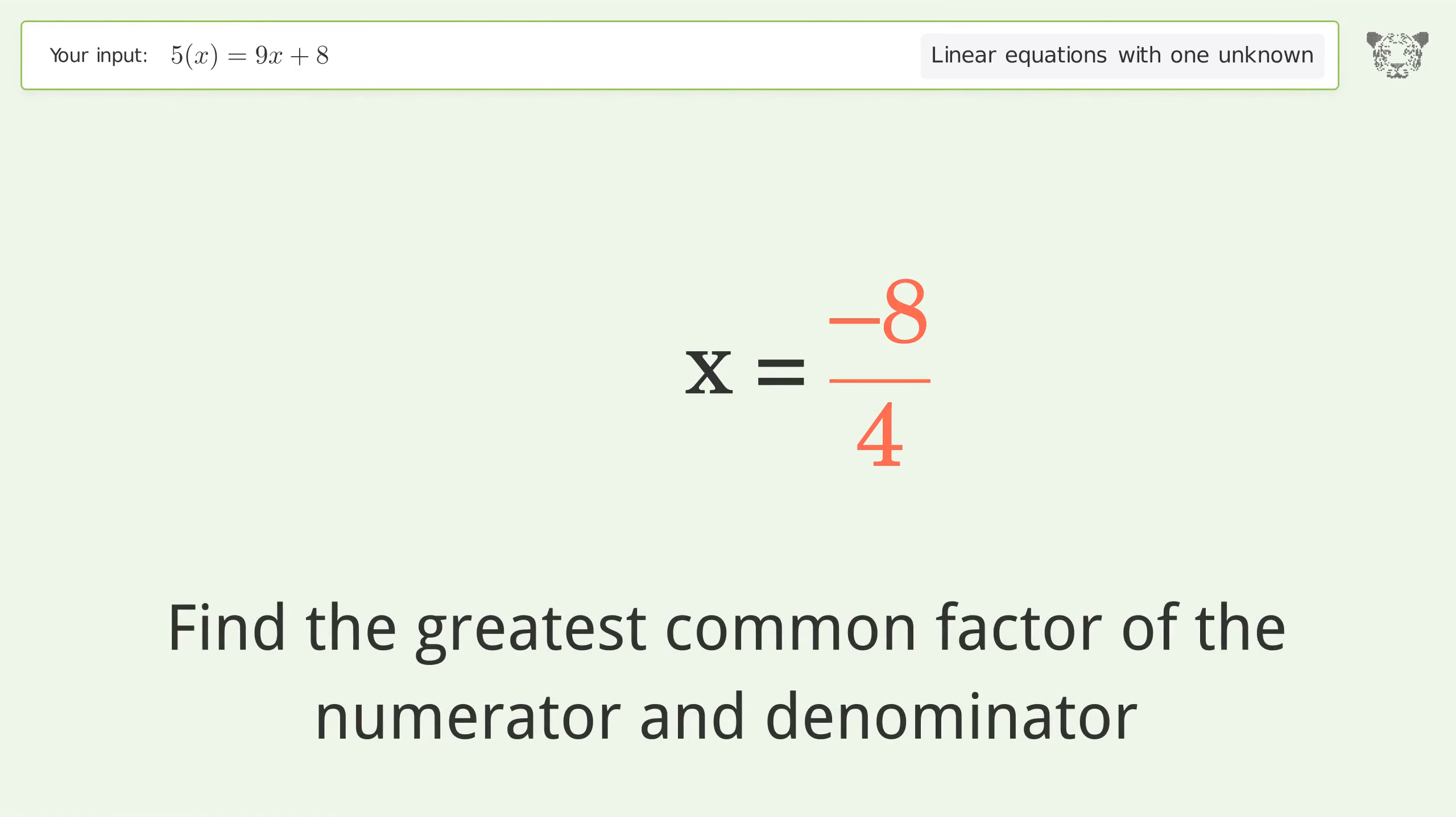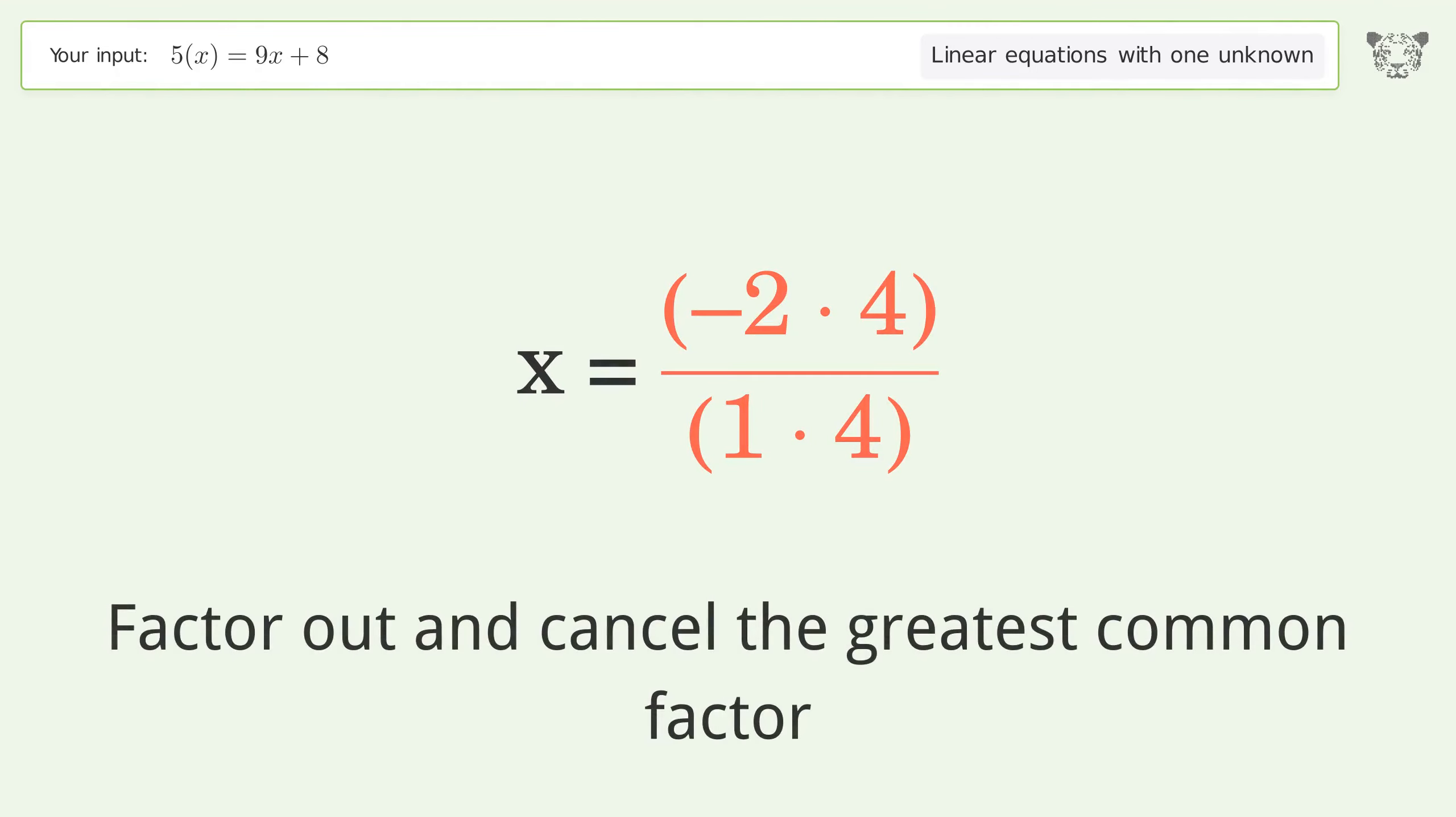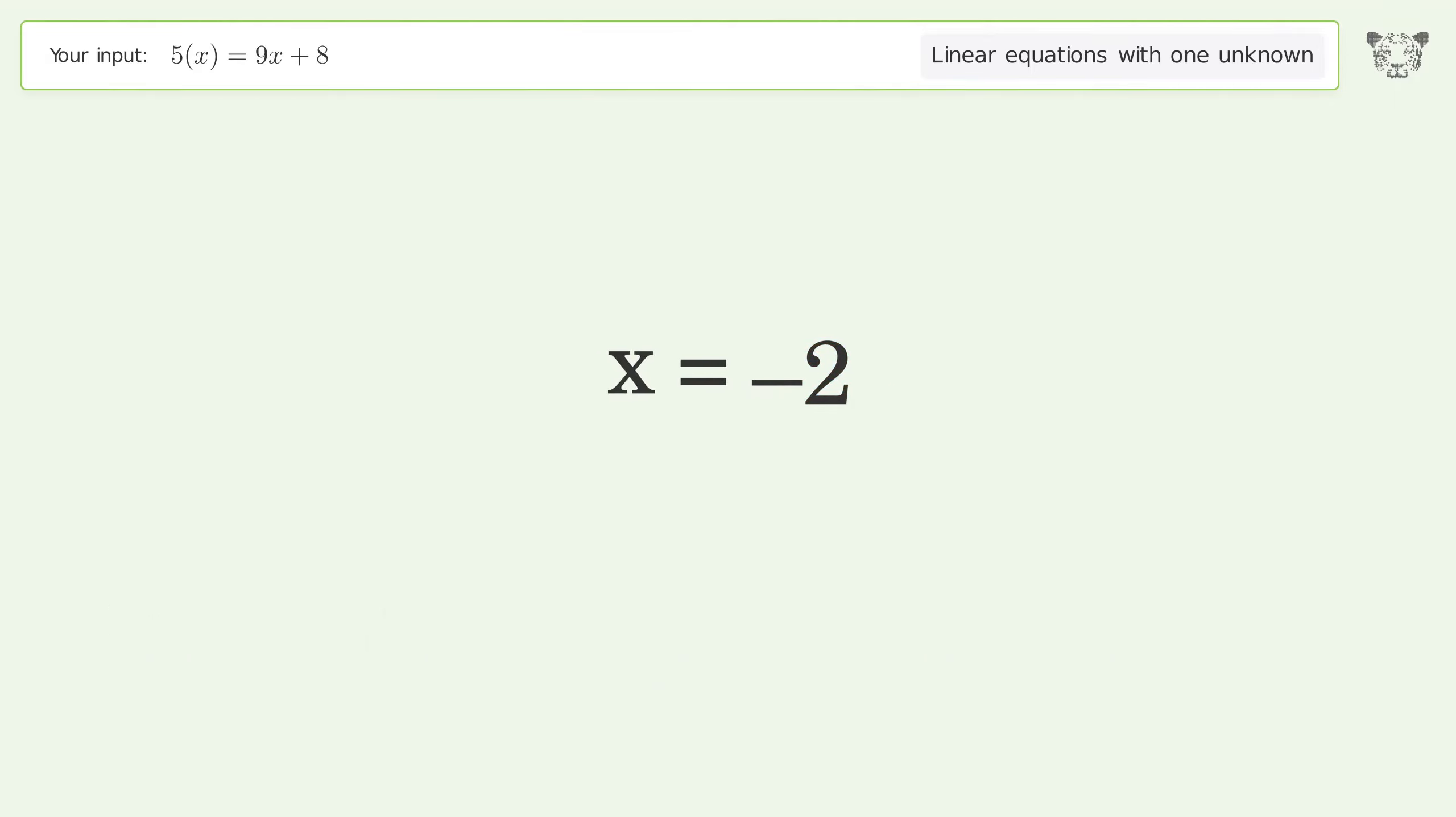Find the greatest common factor of the numerator and denominator. Factor out and cancel the greatest common factor. And so the final result is x equals negative 2.